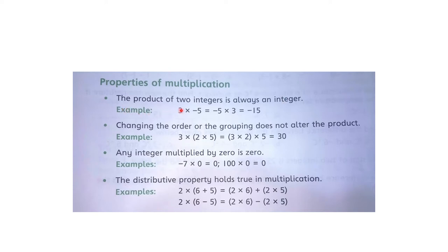For example, minus 5 into 3: multiply karein to answer minus 15 aata hai. Similarly, 3 into minus 5 or minus 5 into 3, answer will be minus fifteen.